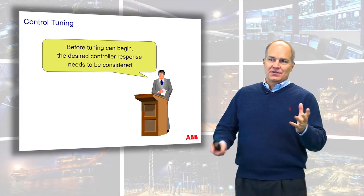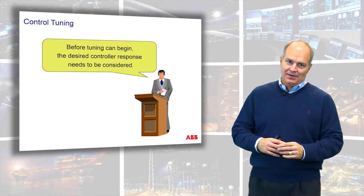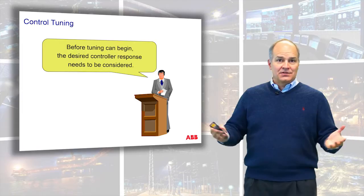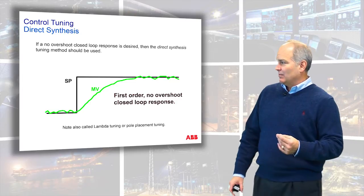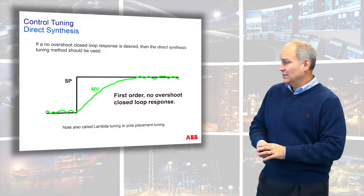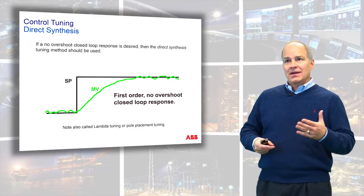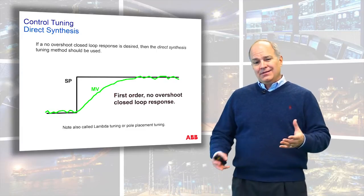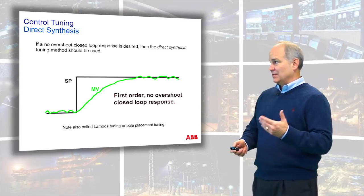You have to decide what you want. We're not going to get into phase leads and gain margins — we're basically going to ask: do you want an overshoot, yes or no? The first method is called a first-order process or no-overshoot approach. You change the set point and the process comes right up to it. This is called direct synthesis — sometimes referred to as lambda tuning or pole placement — and it results in no overshoot.